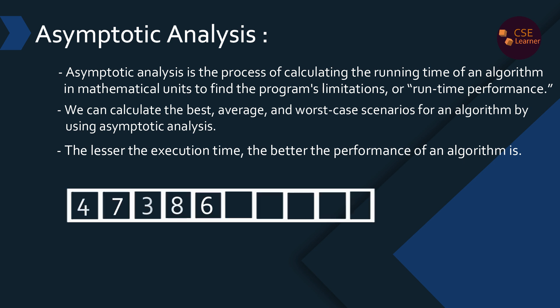Let's look at an array of five elements. An array is a continuous memory structure. Values are stored in continuous memory locations. A[0] is the first value, A[1] is the next value, and A[2] is the next value. This is continuous memory.